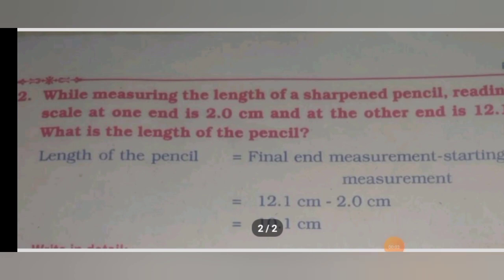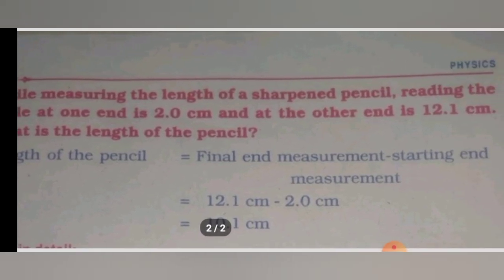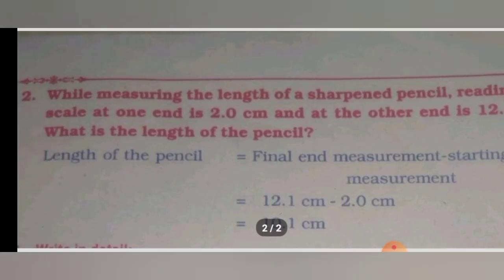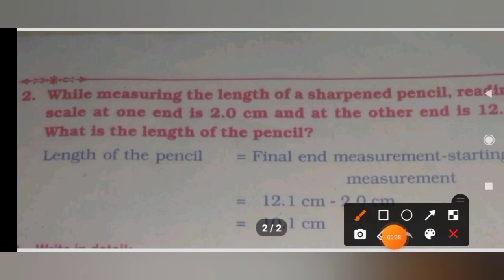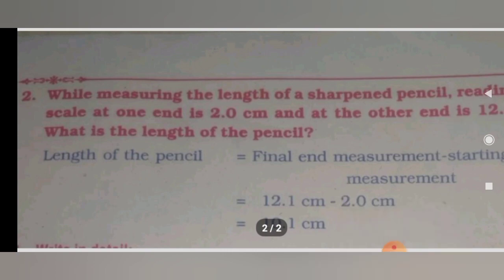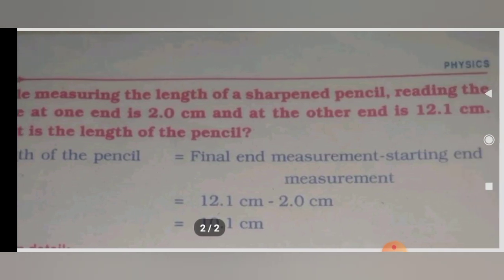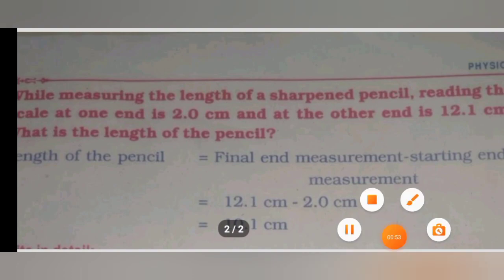Here is the next question: while measuring the length of a sharpened pencil, the reading on the scale at one end is 2.0 centimeters and at the other end is 12.1 centimeters — what is the length of the pencil? Length of the pencil equals final end measurement minus starting end measurement. So 12.1 centimeters minus 2.0 centimeters gives the answer as 10.1 centimeters.